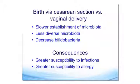Birth by C-section versus vaginal delivery does cause a significant slowing down of the establishment of the microbiome. It is typically associated with a less diverse microbiota — and you heard a little bit already about the importance of diversity — with the consequence of infections as well as allergy.